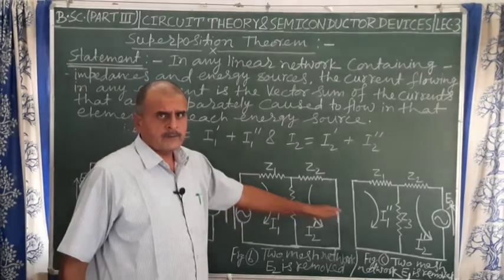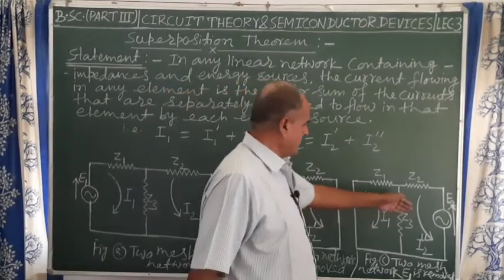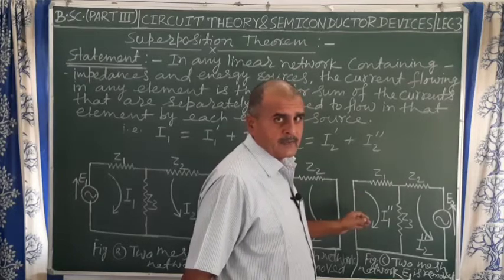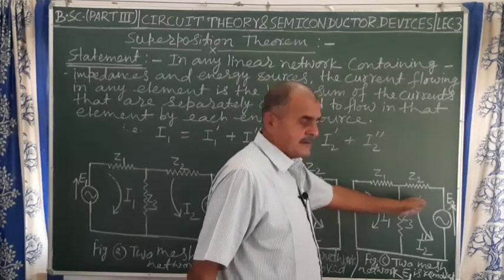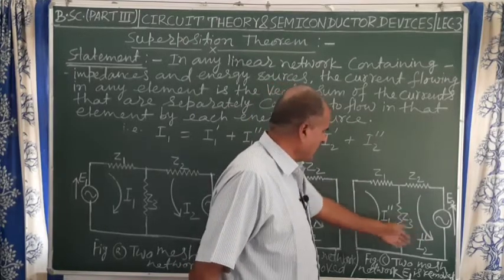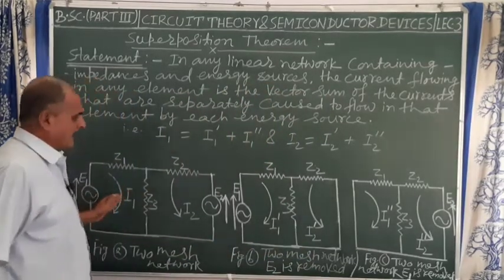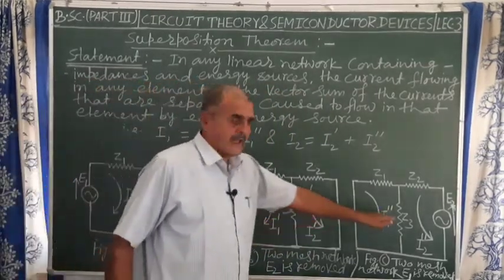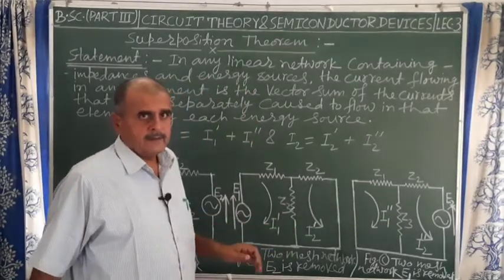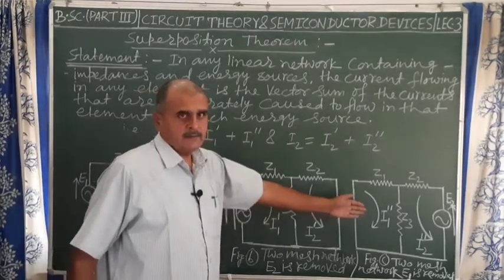When generator or energy source e2 is removed, the current is i2-dash. And in figure C, when energy source e1 is removed, the current that flows in the second branch of the two-mesh network is i2-double-dash. Then we have i1 equals i1-dash plus i1-double-dash, which is the sum of currents that flow in each circuit element.